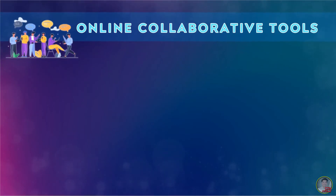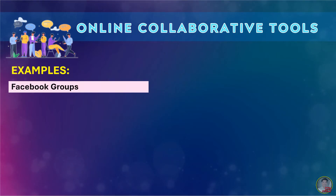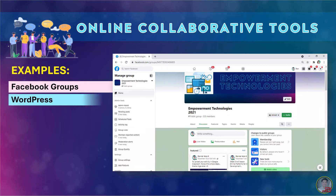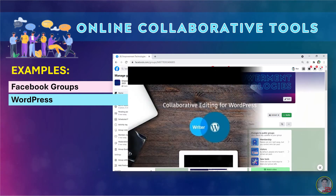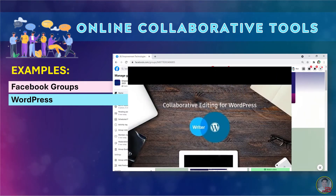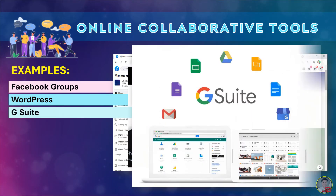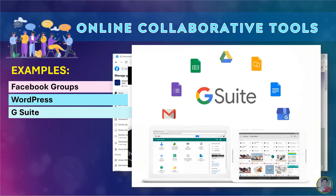Here are examples of online collaborative tools. Number 1 is Facebook Groups, which allows you to create a group page that lets people in your group communicate their ideas. Number 2 is WordPress, which allows multiple contributors for a single blog. Number 3 is G Suite, a brand of cloud computing productivity and collaboration tools, software, and products developed by Google.